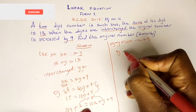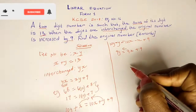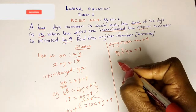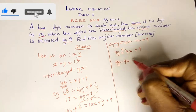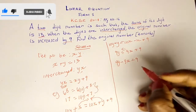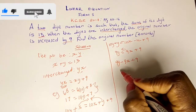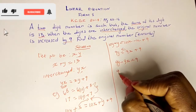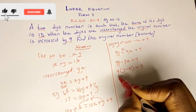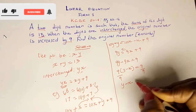Putting like terms together: 10Y minus Y equals 10X minus X plus 9, so we shall have 9Y equals 9X plus 9. Bringing the unknown values to one side: 9Y minus 9X equals 9. Since 9 is common, factoring it out we get Y minus X equals 9, then dividing both sides by 9 gives Y minus X equals 1.